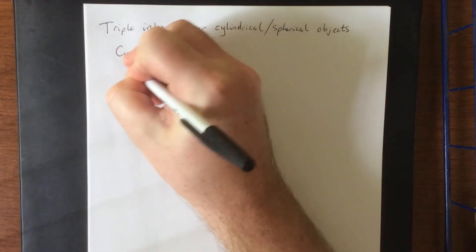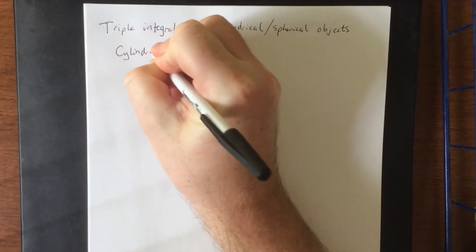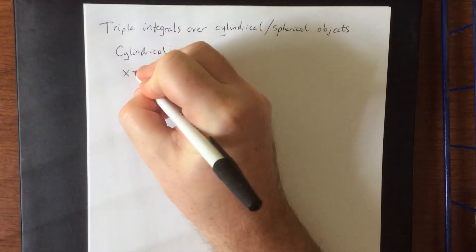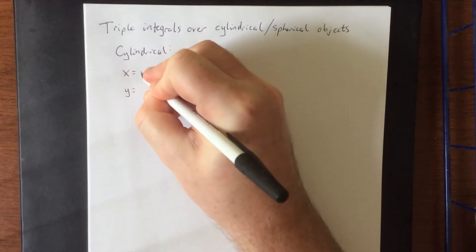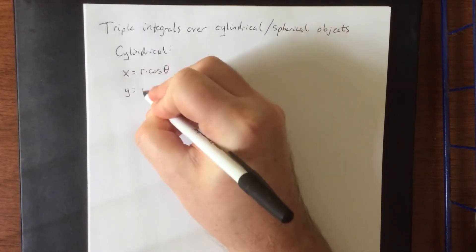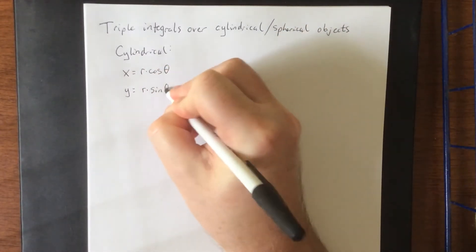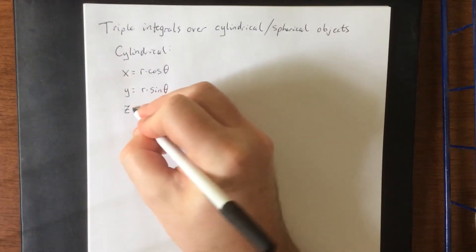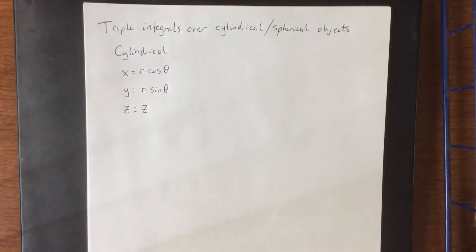Now as a reminder for cylindrical coordinates, cylindrical coordinates are what you get when you convert x and y into polar coordinates while making no change to z. So x would be r times the cosine of theta, y would be r times the sine of theta, and z is left as simply z.